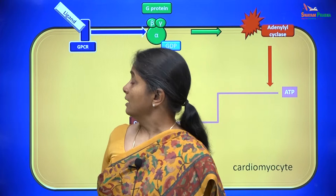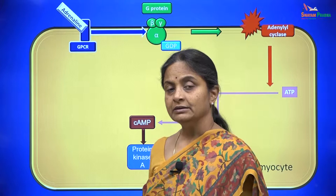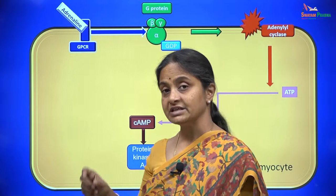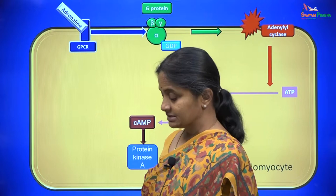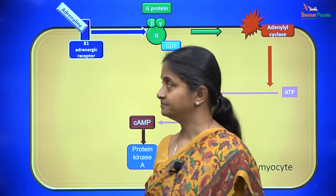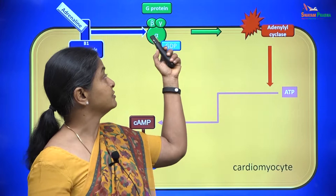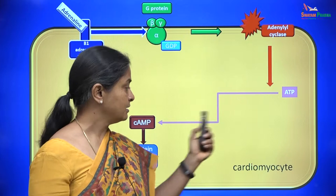A real example of a ligand which uses the cyclic AMP pathway is adrenaline. There are many types of adrenergic receptors: alpha, alpha 1, alpha 2, beta 1, and beta 2 adrenergic receptors, and each receptor activates a different pathway. It is the beta 1 adrenergic receptor which uses the cyclic AMP pathway. When adrenaline binds to the beta 1 adrenergic receptor, the G-protein is activated and the alpha subunit moves and activates adenylyl cyclase. Cyclic AMP increases as a result of adenylyl cyclase activity.